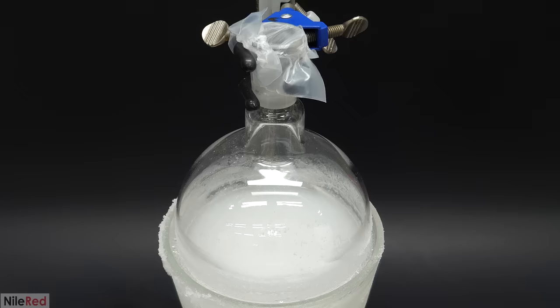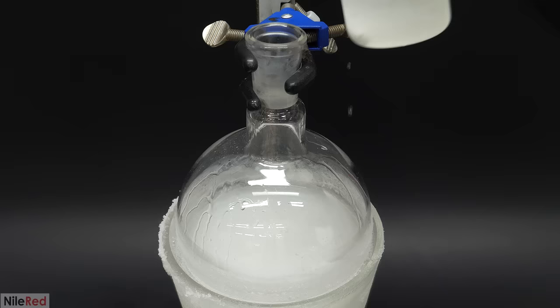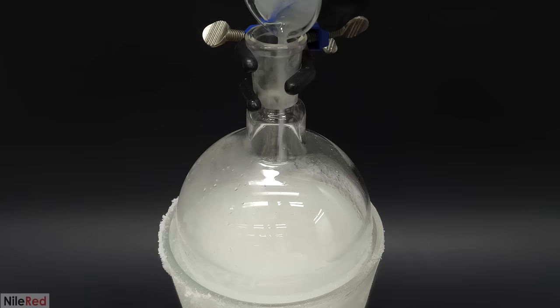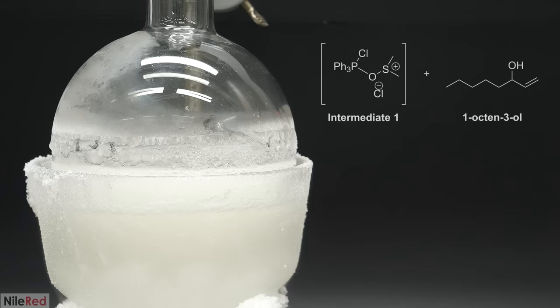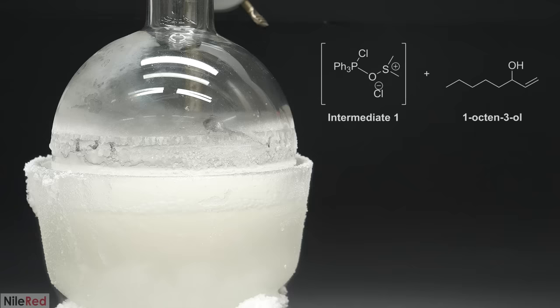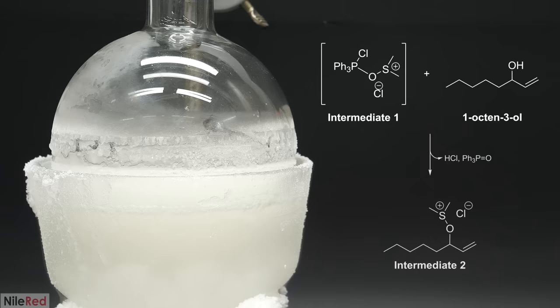About an hour later I came back to the main reaction and I started adding the alcohol. To try and keep things as cold as possible though, the alcohol solution was pre-chilled using a smaller dry ice bath. When it was eventually all added, I covered the top again and I waited 15 minutes. The reaction here again isn't known for certain but it's believed that the oxygen in the alcohol attacks the sulfur in the intermediate and it kicks off the other oxygen. This forms this second intermediate molecule which is kind of a combination between the 1-octen-3-ol and the DMSO.